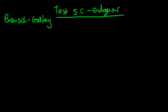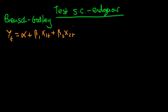Reminding ourselves of what we had in the previous video: we have some population process yt which is determined by two independent variables, x1t and x2t, in our regression equation, and some error et. The only difference between this regression specification and the previous one is the fact that I've included another independent variable.